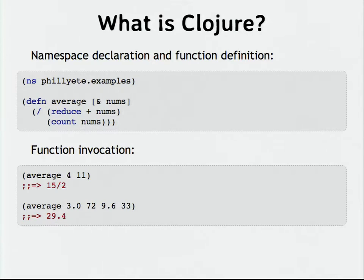That's Clojure — that's what it looks like. It's a dynamically typed language. It runs on the JVM and compiles to Java bytecode. It has a Lisp-like syntax, so there are lots of parentheses. And it's organized around immutable data structures, functional programming, and concurrency.